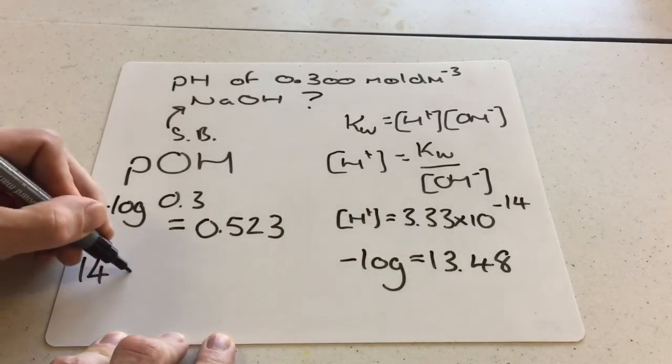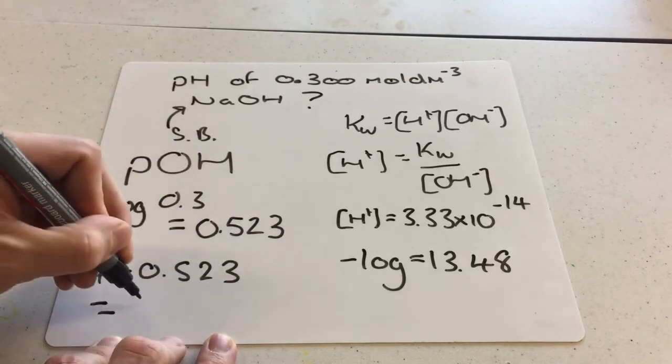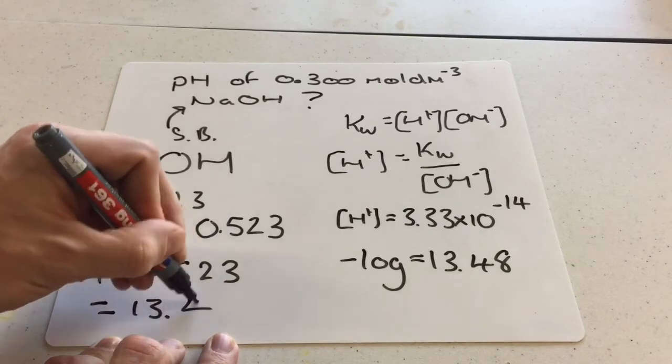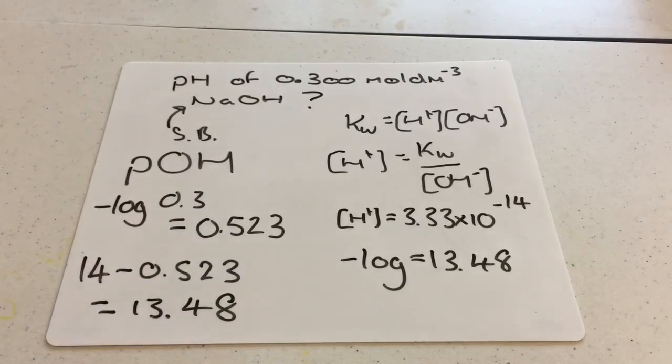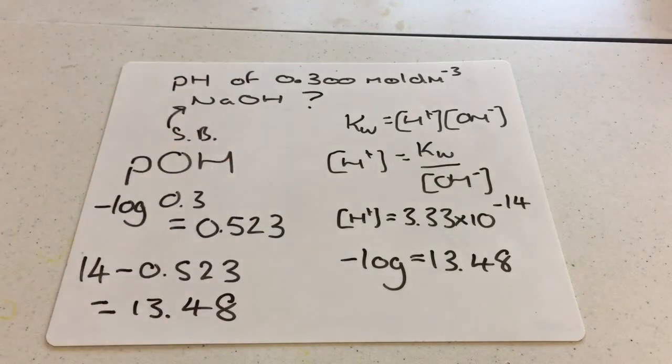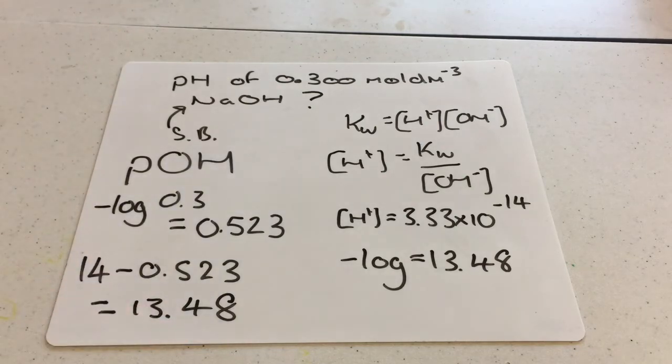All you do at the end is 14 minus that, and it gives you the correct answer, if you round it, just like I did before, of 13.48. So there's this whole other way to calculate it, and you'll find it in OCR mark schemes. They do say accept POH method to get to final answer.